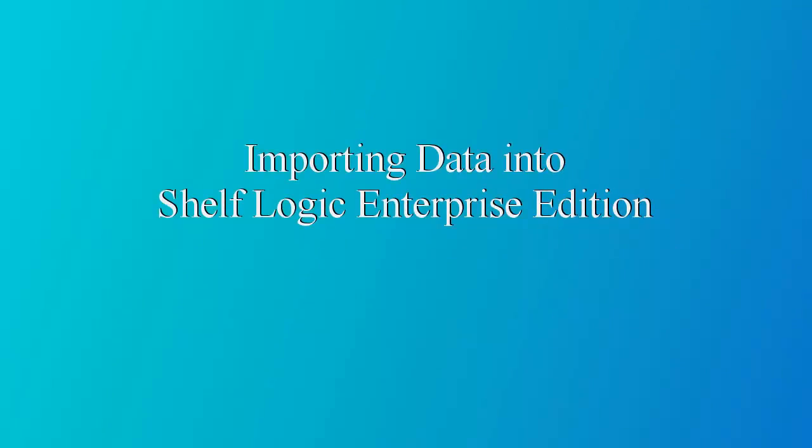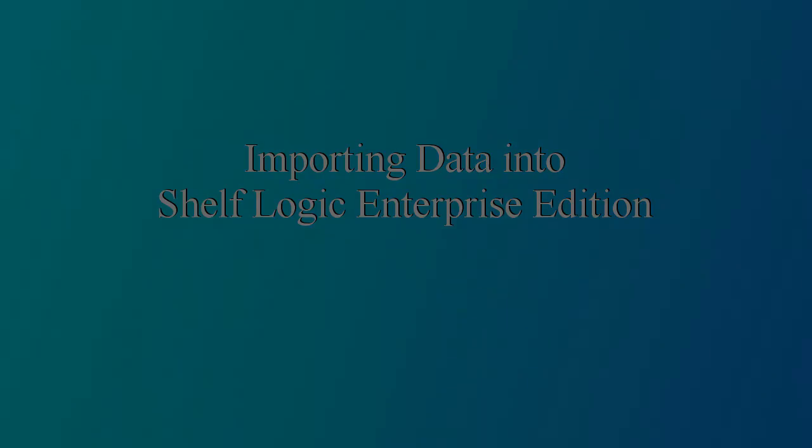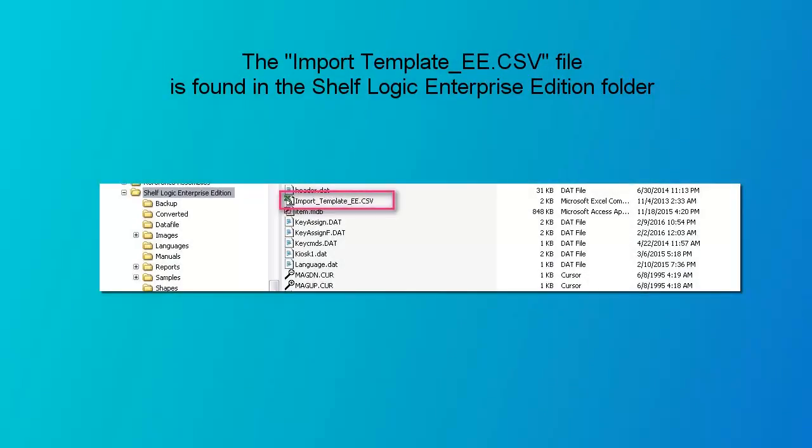This video will show you how to import your product information into the ShelfLogic Enterprise Edition database. This information can be imported using a spreadsheet called ImportTemplateEE.CSV, which is located in the ShelfLogic Enterprise Edition folder.